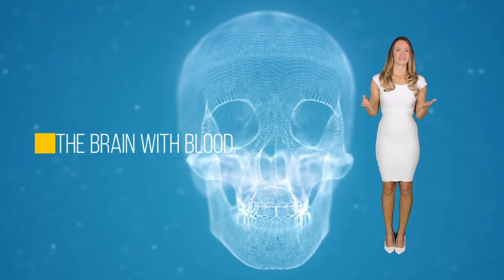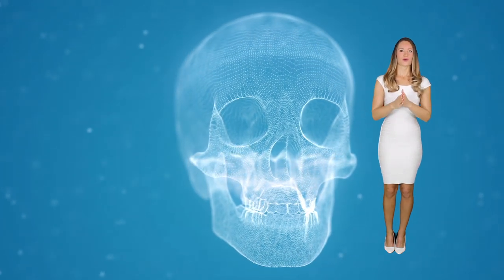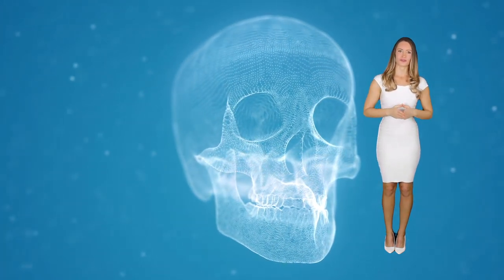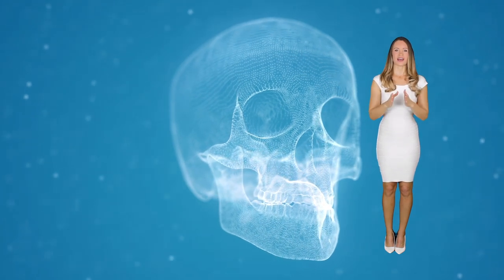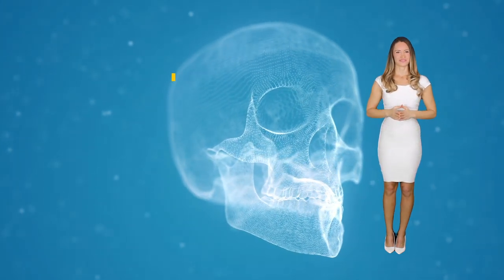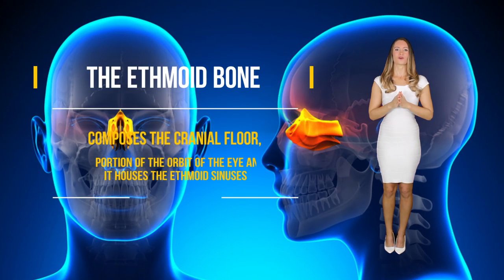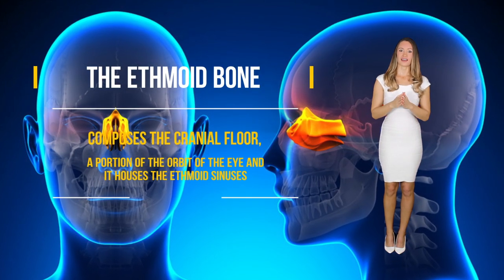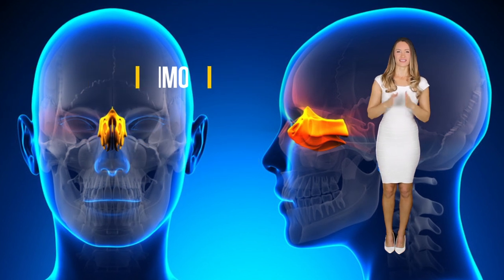The occipital bone composes the back of the cranium and also the floor of the cranium. It also allows the passage of the very important brain stem. The ethmoid bone also composes the cranial floor, a portion of the orbit of the eye, and it houses the ethmoid sinus.